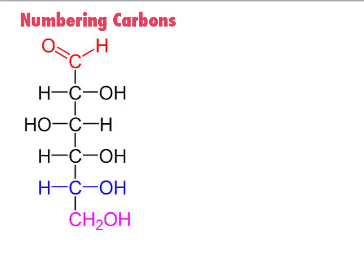Another concept important for first-year university and beyond is how you figure out the number of carbons. The basic rule is if it's a straight chain like this one, we start at the carbonyl group and then go down. So the carbonyl group here would be carbon number 1, then carbon 2, 3, 4, 5, and 6. It's pretty easy with straight chain carbons, but it gets a little trickier when they become rings.